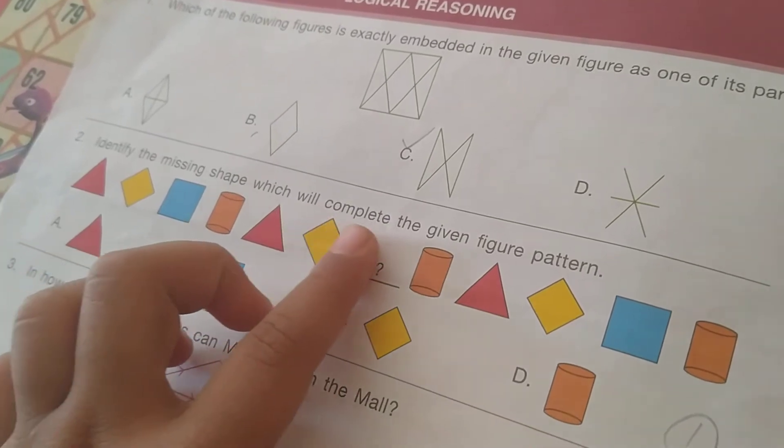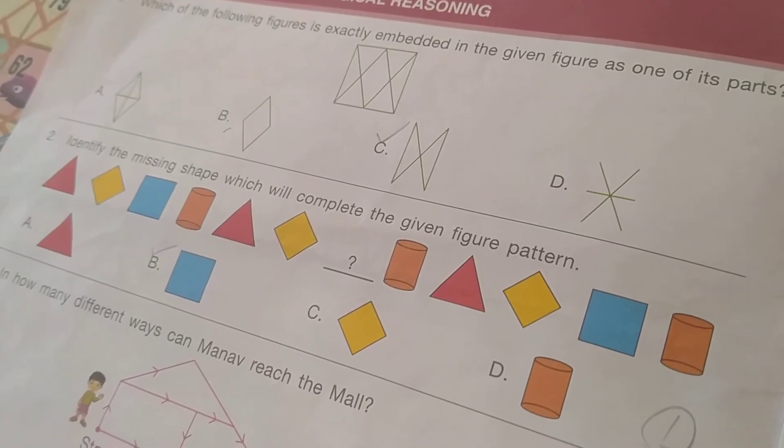Which of the following figures is exactly embedded in the given figure as one of its parts? So the answer is B. Identify the missing shape which will complete the given figure pattern. So the answer is B, square.